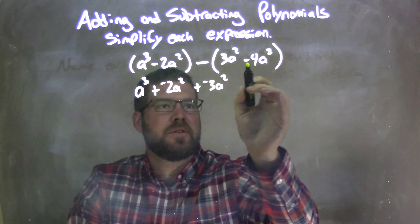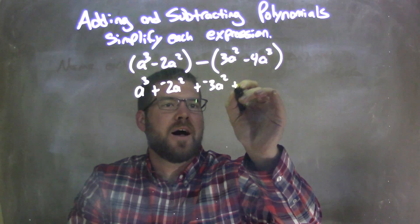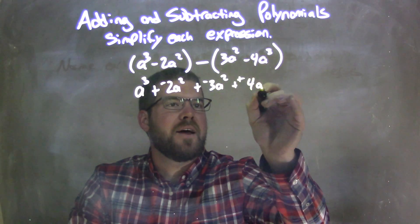And don't forget, it needs to distribute to this one here. Minusing a negative is adding a positive for a to the third.